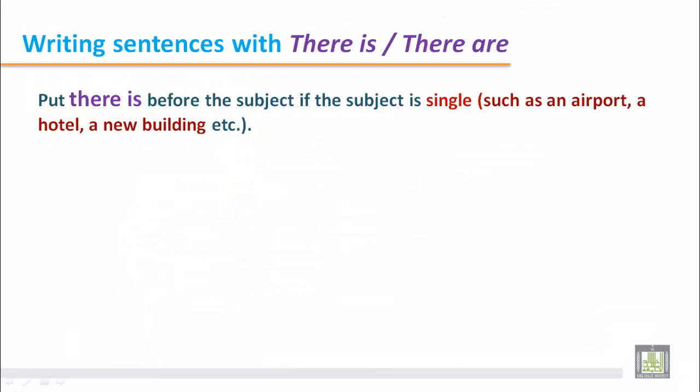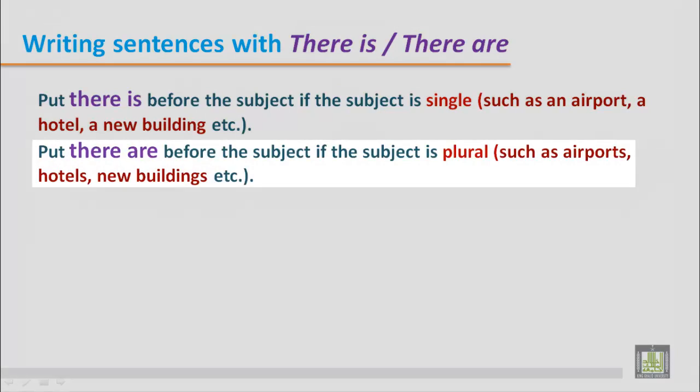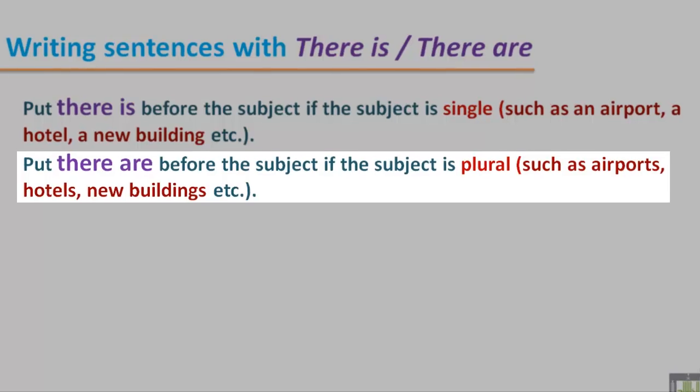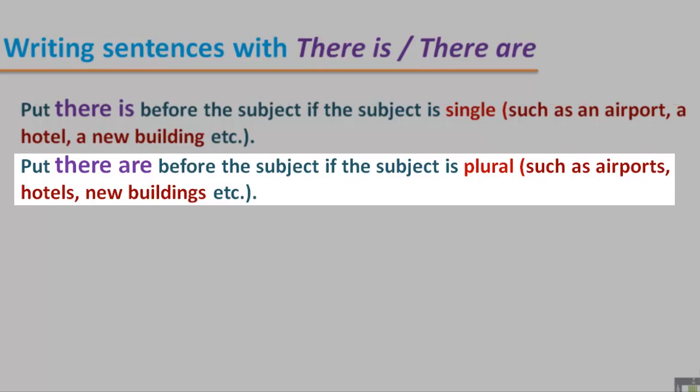Writing sentences with there is or there are. Put there is before the subject if the subject is single, such as an airport, a hotel, a new building. Put there are before the subject if the subject is plural, such as airports, hotels, new buildings.